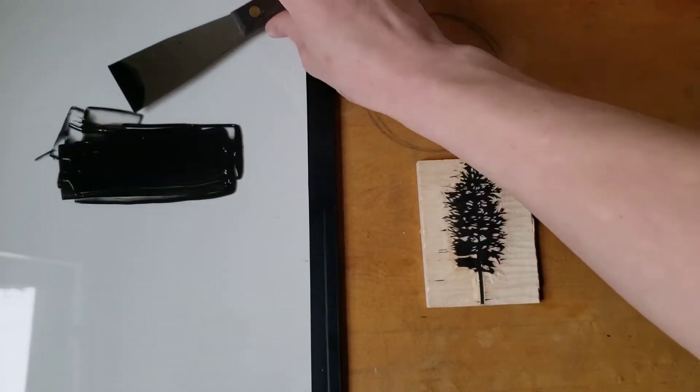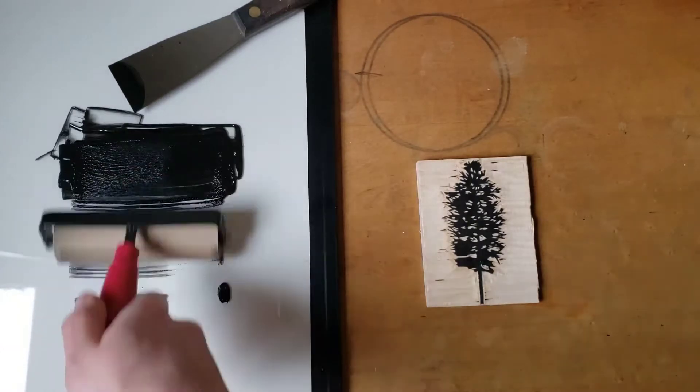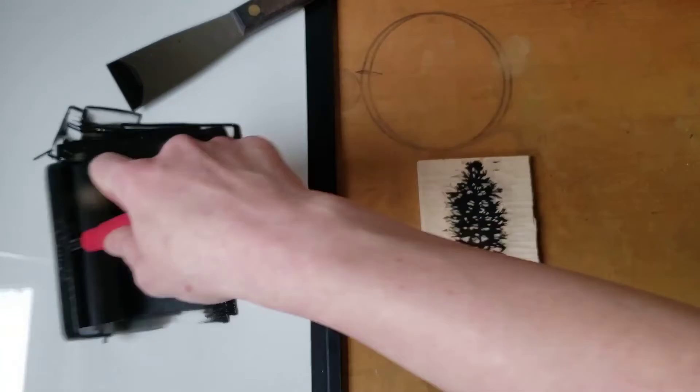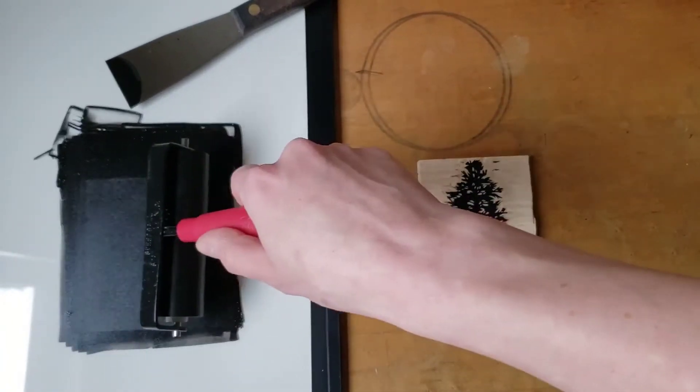Pull out a strip of ink and begin charging the brayer. This doesn't need to take much room, just a smallish rectangle. Be sure to lift the brayer between passes and allow the roller to spin for complete coverage.